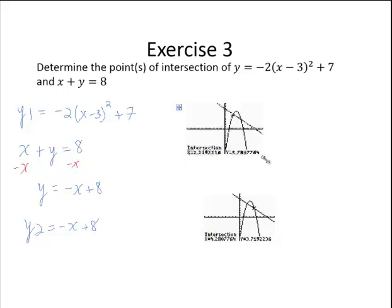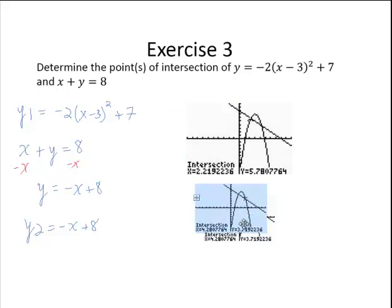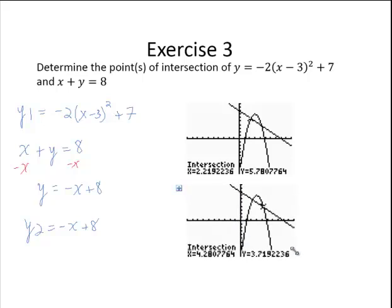So we get two points of intersection for this one. And if we are asked to find the points of intersection, we would need to run the command twice and identify both points of intersection.